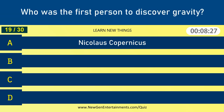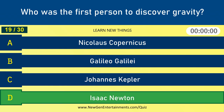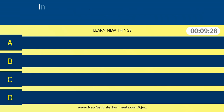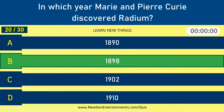Who was the first person to discover gravity? Isaac Newton. In which year did Marie and Pierre Curie discover radium? 1898.